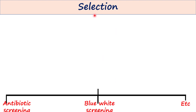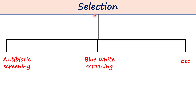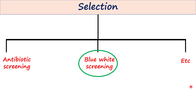For that, we perform the next procedure, which is selection. This selection procedure could be of various types — it could be antibiotic selection, it could be blue-white screening, and so on. Here we will talk about blue-white screening.